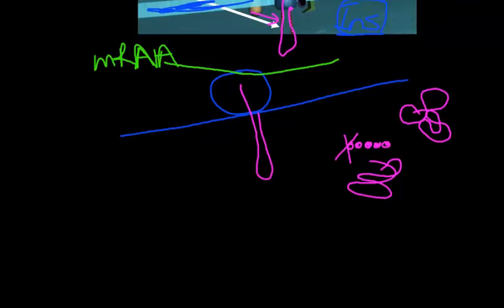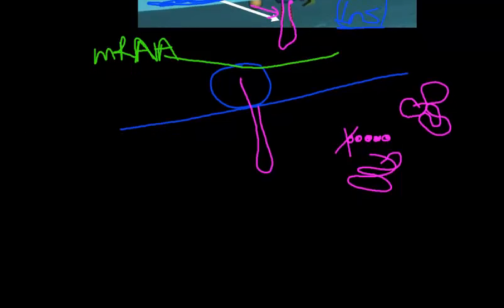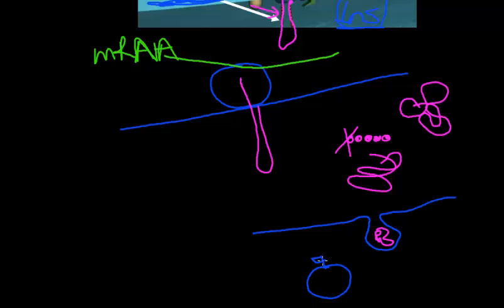At the end of its changes within the rough endoplasmic reticulum, the protein is pushed, well, is moved into a vesicle. And that vesicle, completed, has little labels on it.